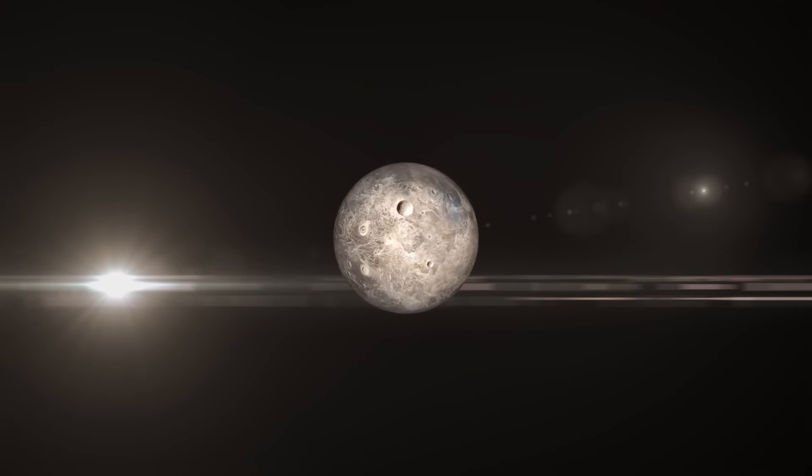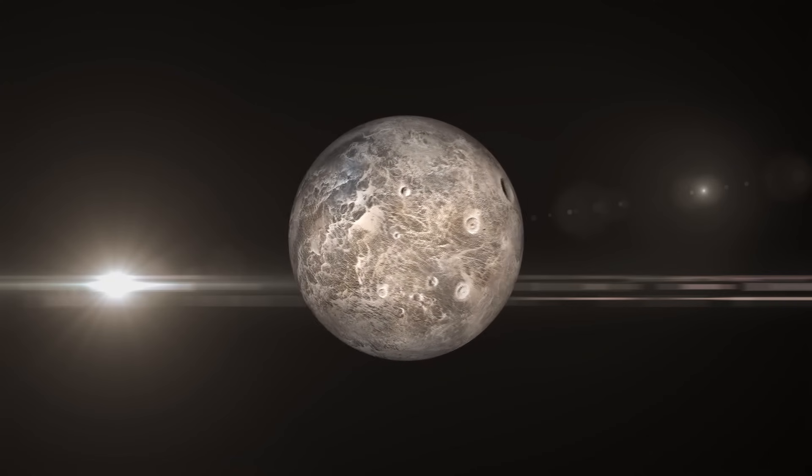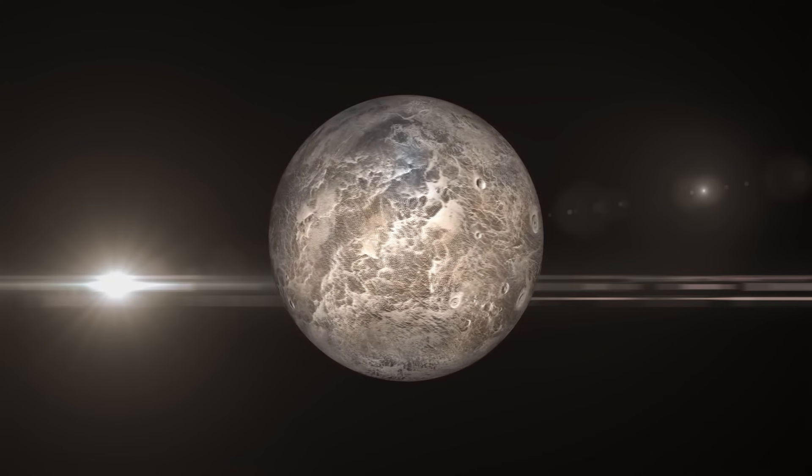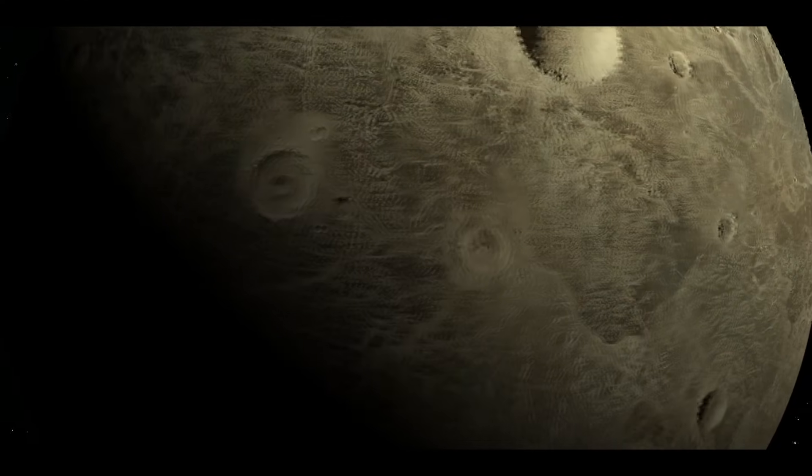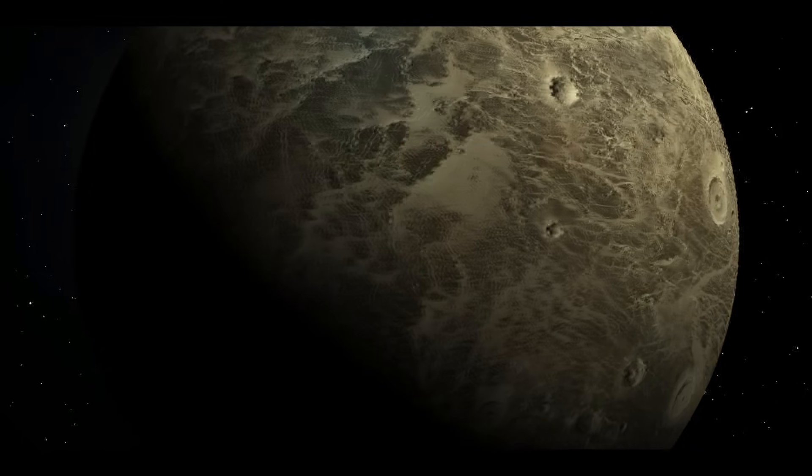An object so large it has pulled itself into a sphere and is classified as a dwarf planet. And thanks to NASA's Dawn mission, we now know it's no dead rock. Dawn's cameras revealed hundreds of patches of dazzlingly bright material. The most famous, in Ocador Crater, are not ice.